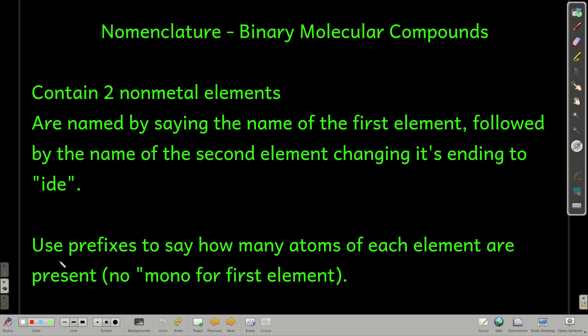There's no charges in these compounds. These are what we call molecular, they're not ionic. Also, you use the prefixes to say how many atoms of each element are present in the molecule. The only exception is if there's only one atom of the first element, you don't say mono, but you do say it for the second.